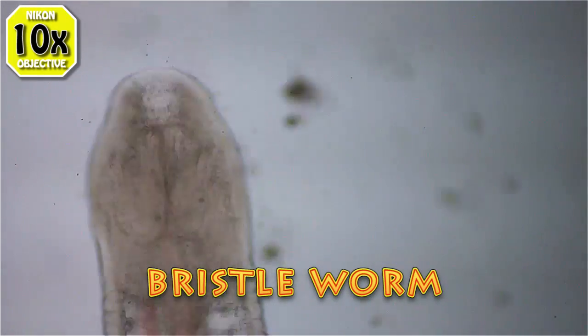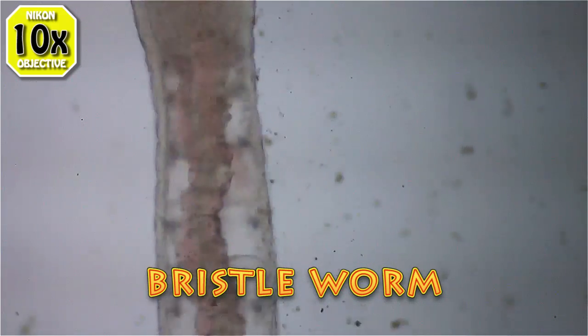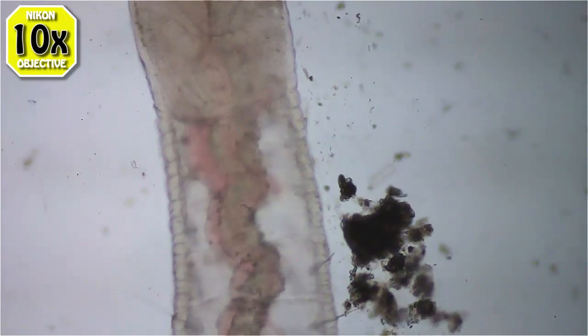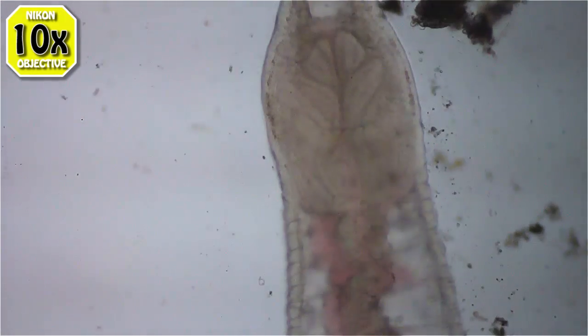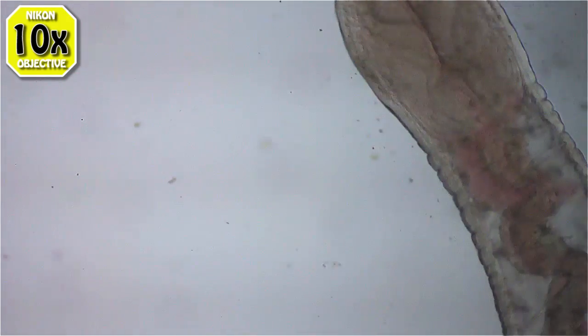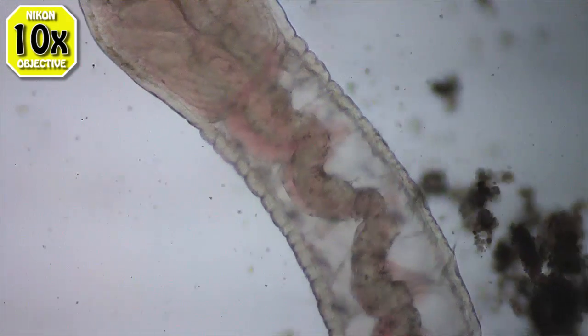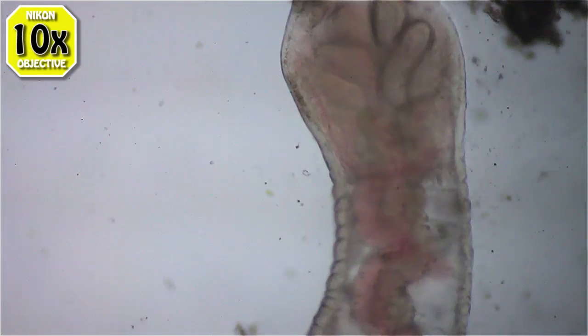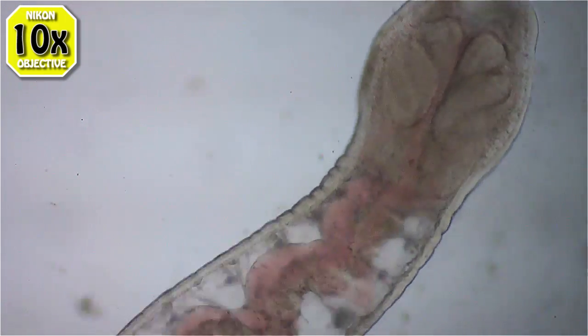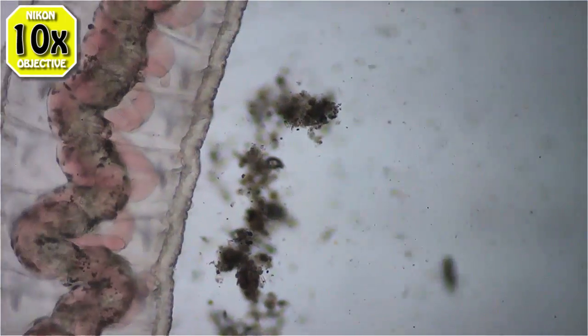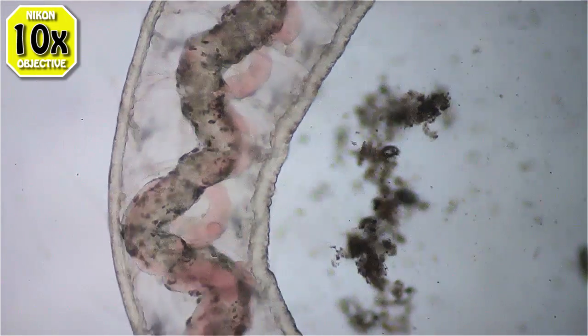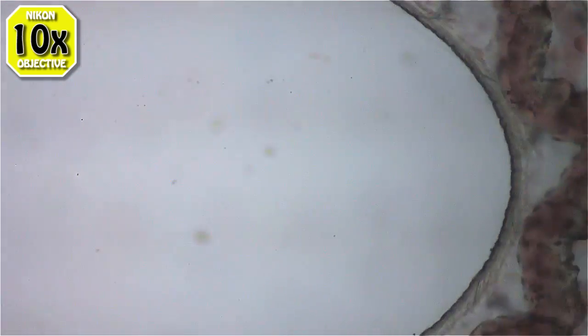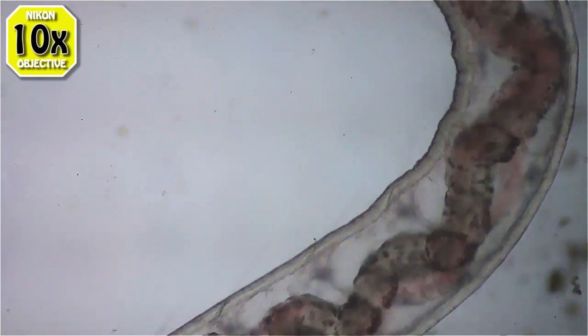This is a freshwater bristle worm. He's about half an inch long, very thin like a mechanical pencil lead, the real thin type. He's small but he's big enough to see with the naked eye if you know where to look.